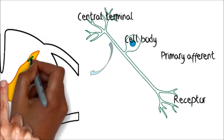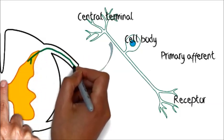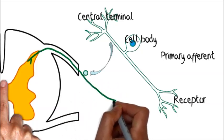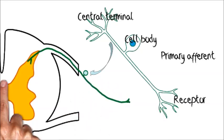If we draw this even more diagrammatically it would be drawn situated like this in the cross section of the spinal cord and that's the type of diagram you'll see from here on in.